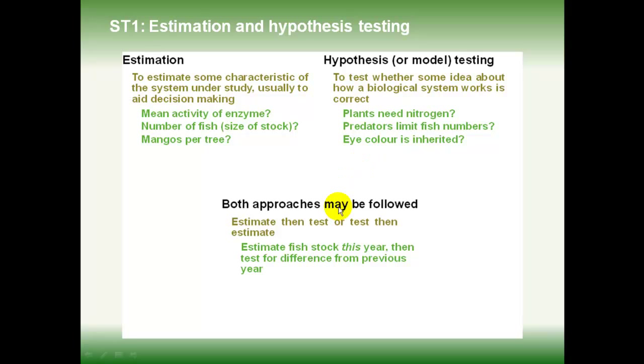Of course, these two approaches are not mutually exclusive. We may do one and then the other. And that is, in fact, the most common approach. Either estimate something and then test hypotheses about it, or work on explanations and then make estimates of the frequency of a disease, how much nutrient is required, and so on.